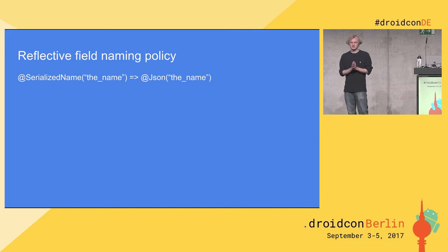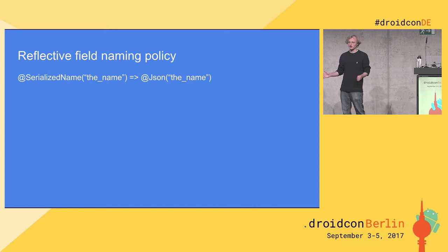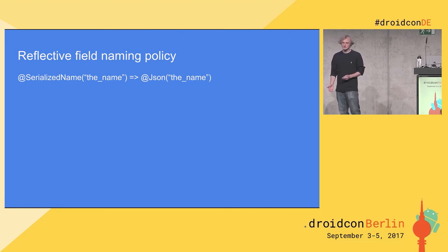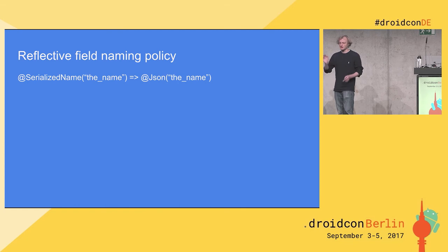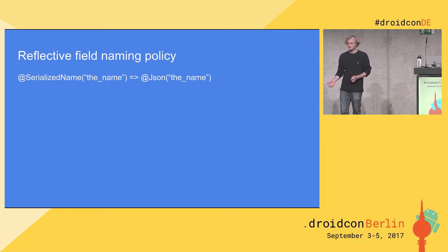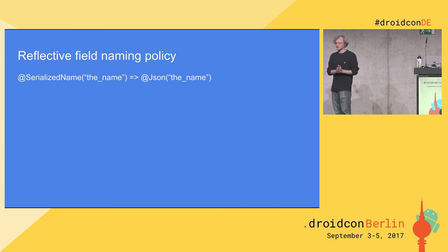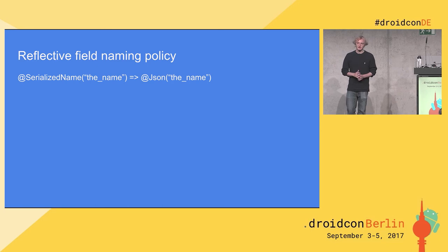This doesn't mean that @SerializedName is gone. Sometimes you might have a field called 'object', which would be a problem in Java because it's a protected keyword. So @SerializedName — or in Moshi, the @Json annotation — still exists. This solves the case for when you really need to use camelCase due to company policy or checkstyle requirements. You can go to every field and annotate it with @Json, and the reflective class JSON adapter will use that name instead of Java's field name. So the change to make when migrating is: replace @SerializedName with @Json.